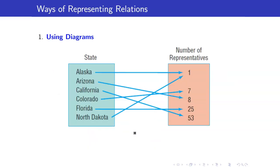There are five ways to represent relations. The first of them is through diagrams. I am representing the relation between the set of states in the US and the number of representatives. So in this case, Alaska corresponds to 1 because Alaska has only one representative. Florida corresponds to 25, and so on and so forth.